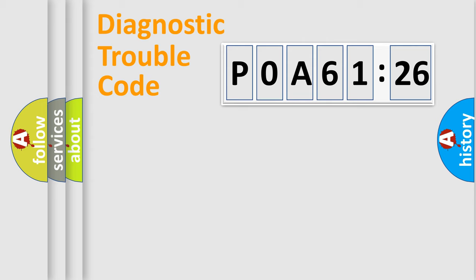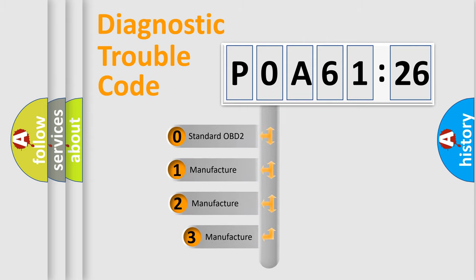Powertrain, Body, Chassis, Network. This distribution is defined in the first character code.